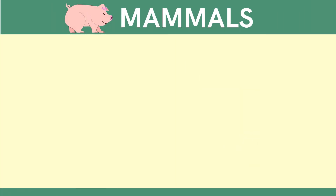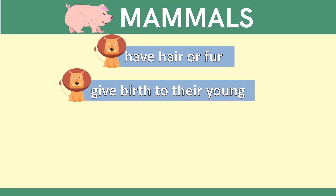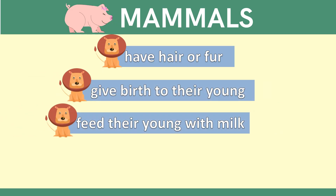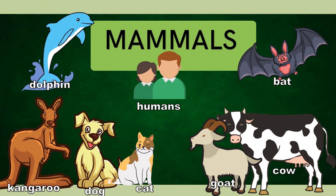Now, class, let us read the characteristics of mammals. Mammals have hair or fur. Mammals give birth to their young. Mammals feed their young with milk. Mammals have lungs and need air to breathe. Other examples of mammals are dolphin, humans, bat, kangaroo, dog, cat, goat, and cow.